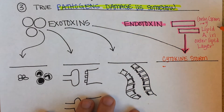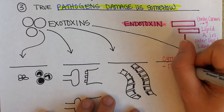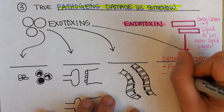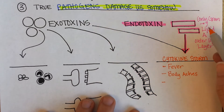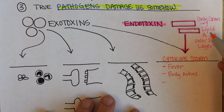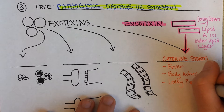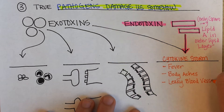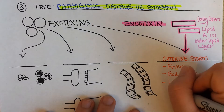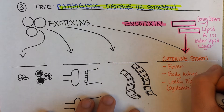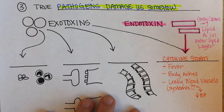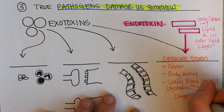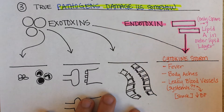So if there's a gram-negative infection that gets into the bloodstream, it can cause systemically a fever, body aches, or even if any of that lipid A gets into the bloodstream — leaky blood vessels. If it's systemic, then you're going to have a drop in blood pressure. We call that shock — a precipitous drop in blood pressure.